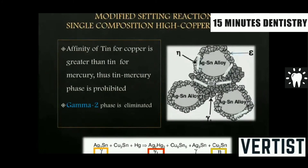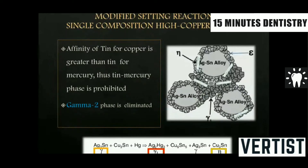The unicomposition alloy has a totally modified reaction. After the initial reaction, the tin — because of its affinity towards copper — directly forms an eta molecule, that is a copper-tin molecule. This eta molecule completely eliminates the gamma-2 phase. So you have your unreacted particles, your gamma-1 phase which is very strong, and then the other stronger phase — the copper-tin (eta) phase. That is the advantage of the unicomposition alloy.